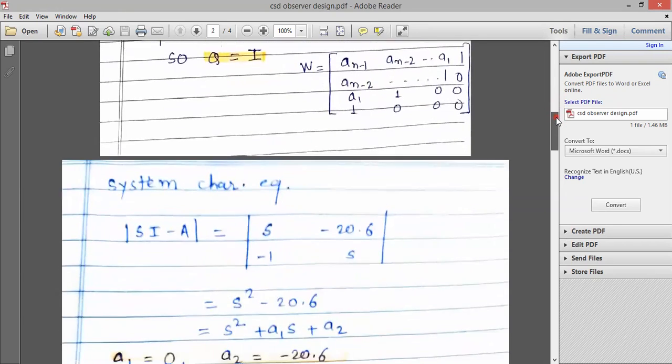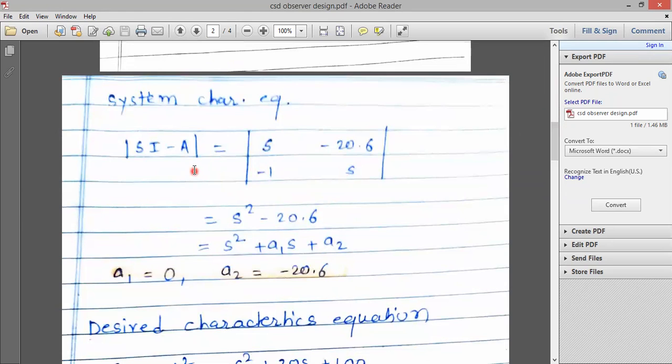So that SI minus A, we get the characteristic equation. So S square minus 20.6 S.